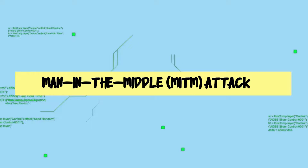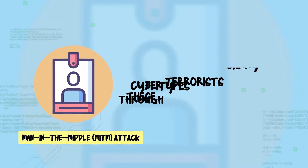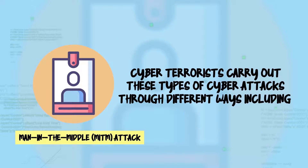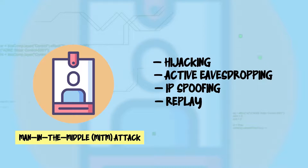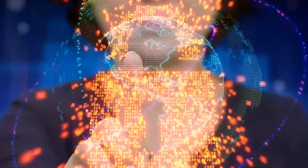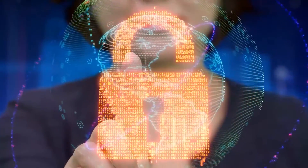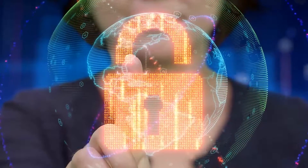Number one: man-in-the-middle attack. Cyber terrorists carry out these types of cyber attacks through different ways, including hijacking and active eavesdropping, IP spoofing, and replay. Common solutions to man-in-the-middle attacks are encryption, tamper detection, and authentication of digital certificates.